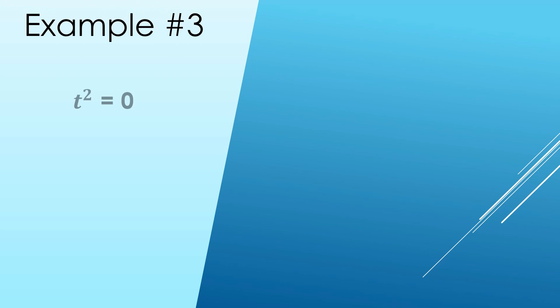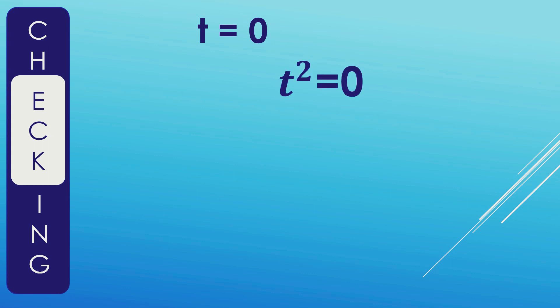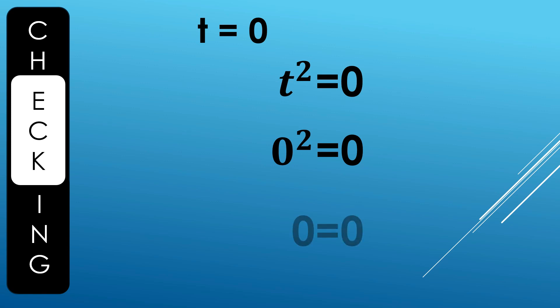For example number three, t squared equals zero. Taking its square roots and simplifying, we get t equals zero. Checking: substitute t equals zero into the original equation t squared equals zero → zero squared equals zero → 0 equals 0. It satisfies the equation, and it has only one solution.